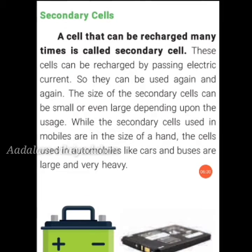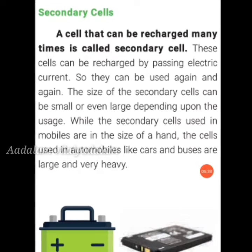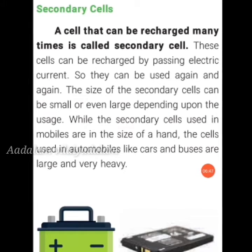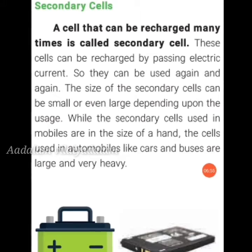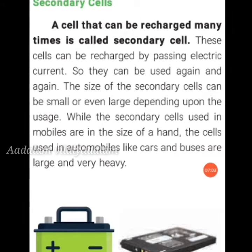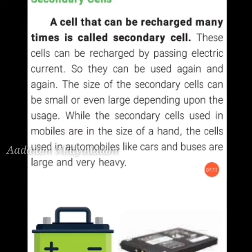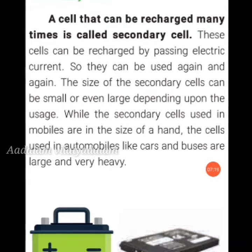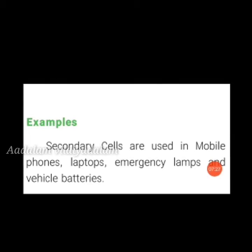The second type is secondary cells. A cell that can be recharged many times is called a secondary cell. These cells are recharged by passing electric current through them and can be used again and again. The sizes of secondary cells can be small or large depending upon the usage. Examples include mobile phones, laptops, emergency lamps, and vehicle batteries like those in cars and buses.